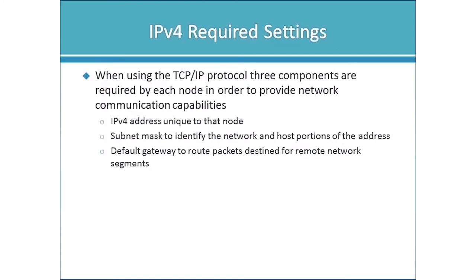Now let's get into the details of the protocol itself. TCP/IP — right now we're referring to it as IPv4; there is IPv6 but we'll cover that later. When you use TCP/IP, three components are required: an IP address, a subnet mask, and a default gateway. An IP address functions like a mailing address — it's unique to that particular node on the TCP/IP network. The subnet mask differentiates between the network and host portions of the address.